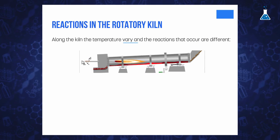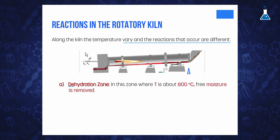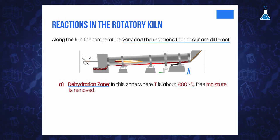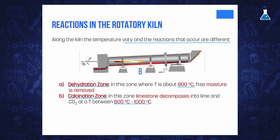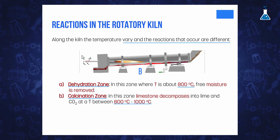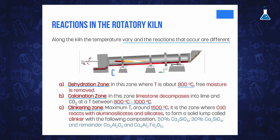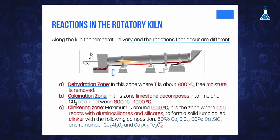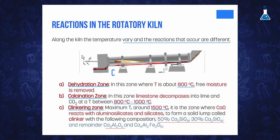The temperature along the kiln varies and the reactions that occur are different, summarized in the following zones. In the dehydration zone, at around 800 degrees Celsius, free moisture is removed. In the calcination zone, at around 800–1000 degrees Celsius, limestone decomposes into lime and carbon dioxide. The clinkering zone is the zone of maximum temperature, around 1500 degrees Celsius, where calcium oxide reacts with aluminous silicates and silicates to form a mixture of approximately 50% tricalcium silicate, 30% dicalcium silicate, and the remaining calcium aluminate and ferroaluminate. This solid lump is called clinker.